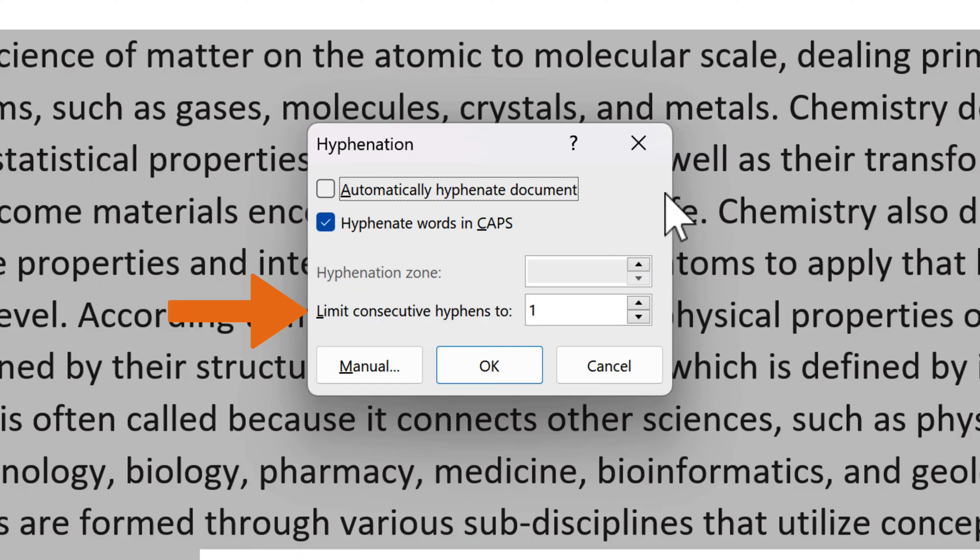The last option is the limit on the number of consecutive lines that end with a hyphen. By clicking the up and down arrows, you can set the exact number of consecutive lines that end with hyphen.